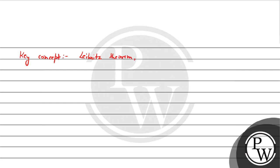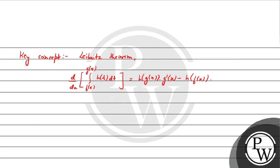जैसा हम जानते हैं कि अगर हमें differentiate करना है एक integral का — let's suppose from f(x) to g(x), these are functions, and h(t) dt का integral है — तो यह equal होता है: सबसे पहले t की जगह g(x) put करते हैं times g'(x), then minus t की जगह f(x) put करते हैं times f'(x)।